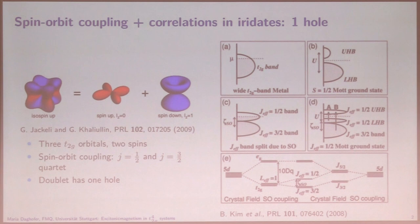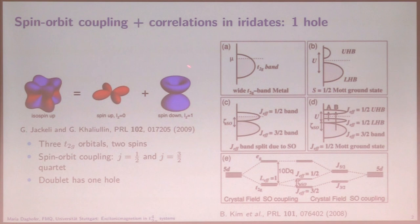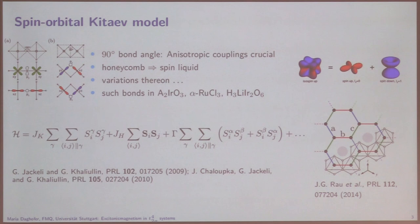I'm focusing in this talk, particularly in the second part, on J=1/2 states. The whole story is that spin-orbit coupling mixes spin and orbitals, making it more sensible to talk in terms of total angular momentum. One puts a hole somewhere in the doublet, and that gives rise to Kitaev physics on the honeycomb lattice, because on the honeycomb lattice one has 90-degree bond angles, which have this special structure of couplings between the effective one-half moments, which behave like a spin.